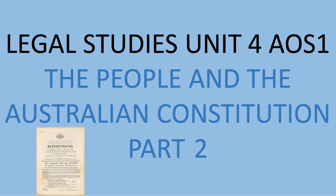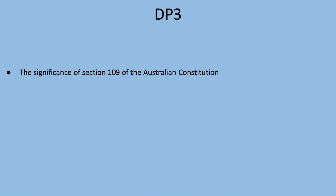Hello everybody and welcome to Legal Studies Unit 4 Area of Study 1: The People and the Australian Constitution, Part 2. The focus of today's video is dot point 3: the significance of Section 109 of the Australian Constitution. This video will only look at one dot point, since dot point 4 is a longer dot point and will require its own separate video.